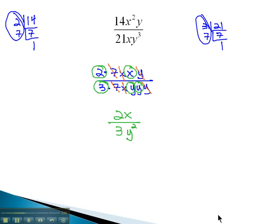And we end up with our reduced final solution of 2x over 3y squared.